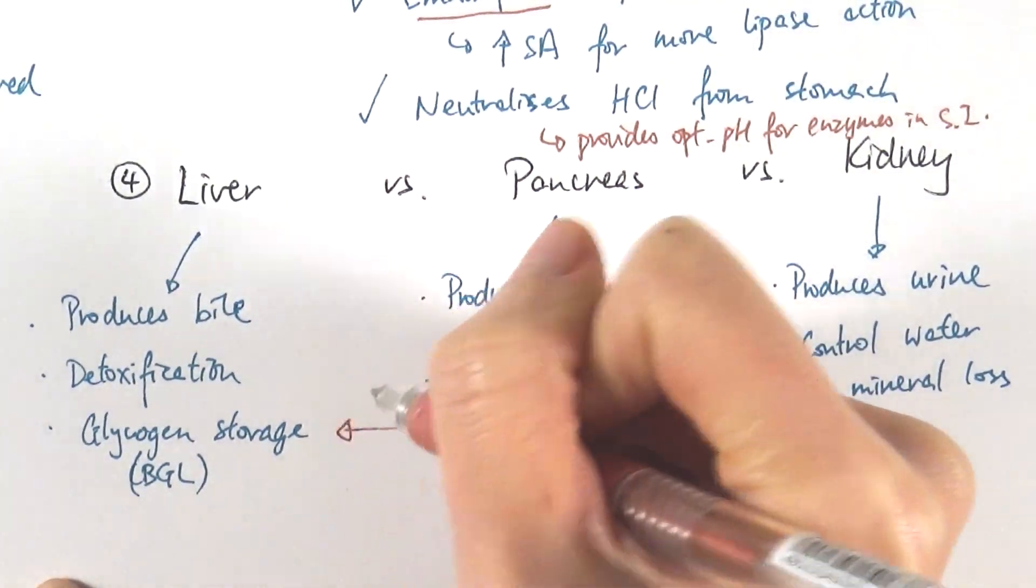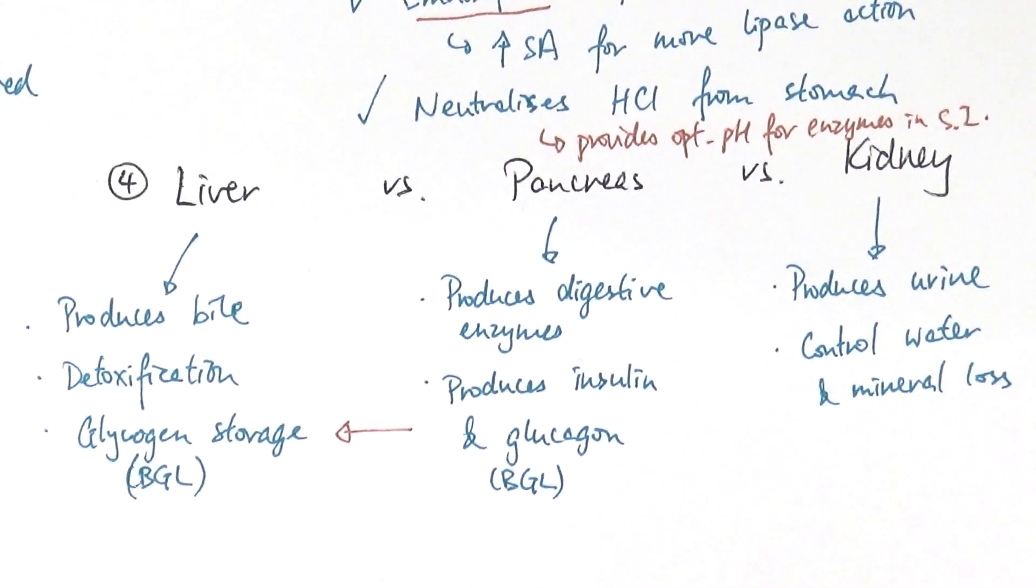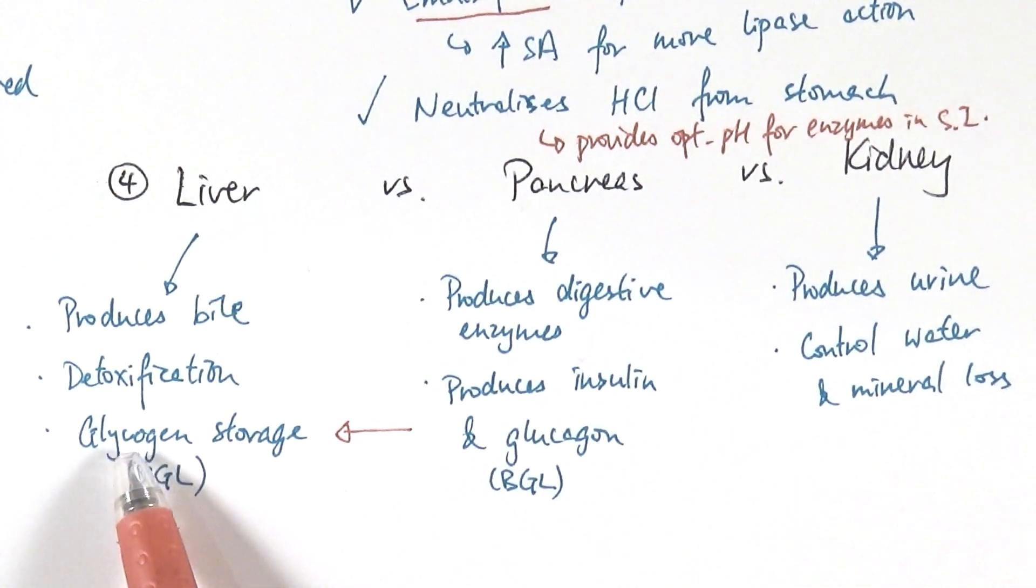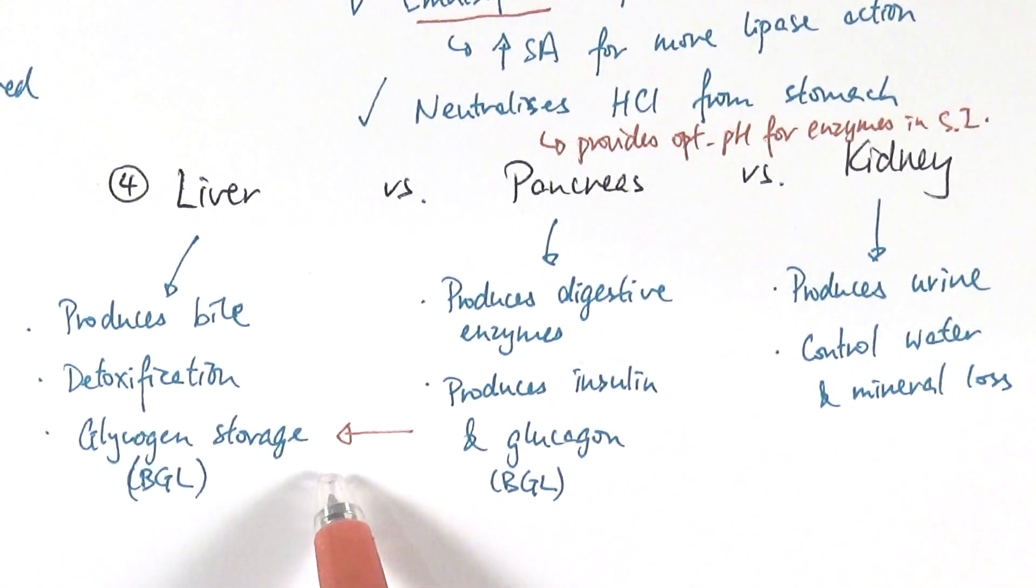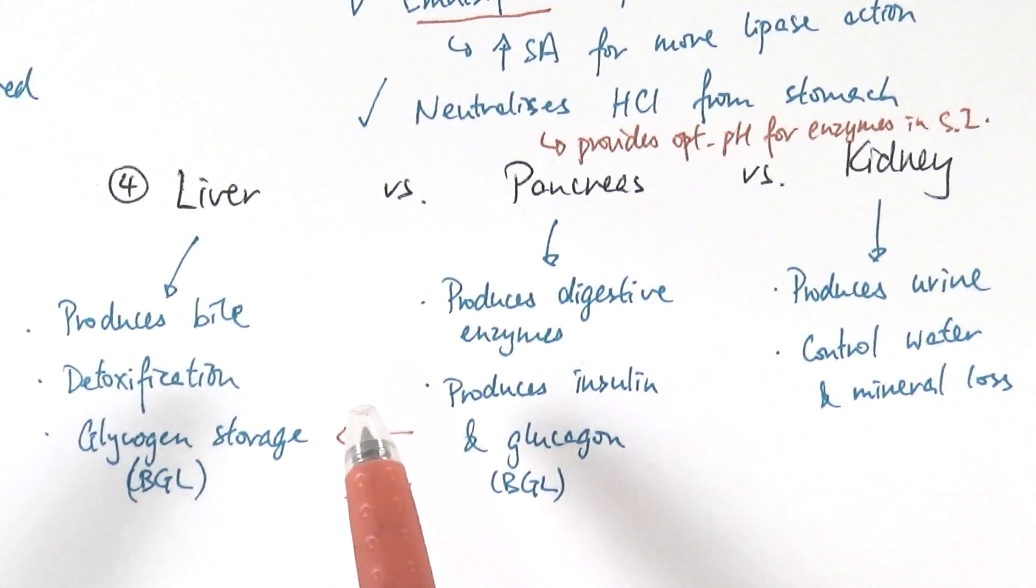So what we say is that if there's a high blood glucose level, then your pancreas produces insulin to change glucose into glycogen, which can be stored in the liver or in the muscles. If the blood glucose level is too low, then glucagon is released, to change glycogen back into glucose in the liver or in the muscles, and that raises it up again.